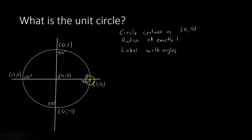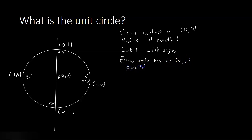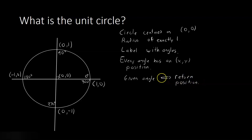Pretty much what you would expect. But the unique thing about the unit circle is that every angle has an x and y position that goes with it. The way we use this in trigonometry is: oftentimes you will be given an angle of some kind and you'll be asked to return, as your answer, some sort of x and y position. So if they gave you 90 degrees, you would say the position is (0, 1). If they gave you 270 degrees, you could say your position is (0, -1).